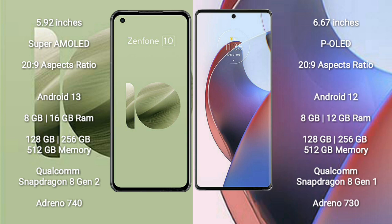Asus Zenfone 10 runs on the Android 13 operating system. Motorola Edge 30 Ultra runs on the Android 12 operating system. Asus Zenfone 10 comes with 8GB and 16GB RAM and 128GB, 256GB, 512GB internal storage.